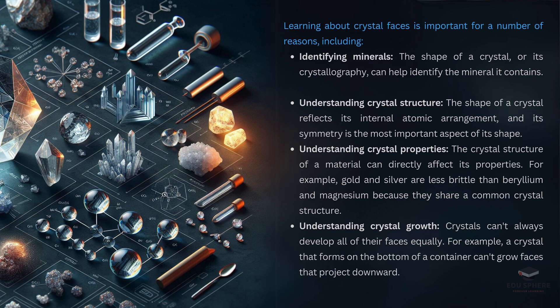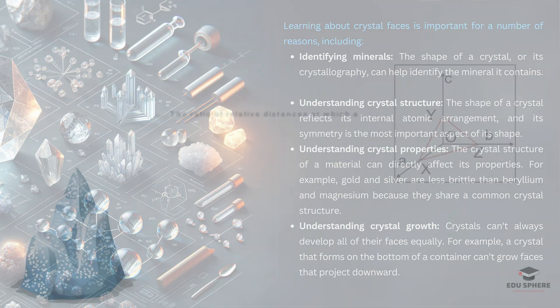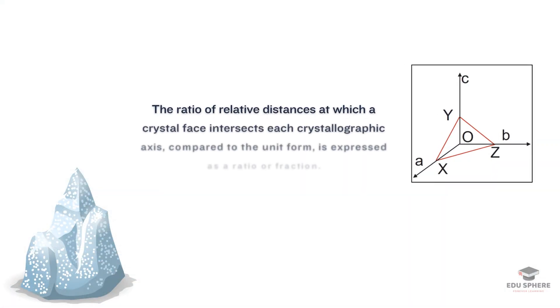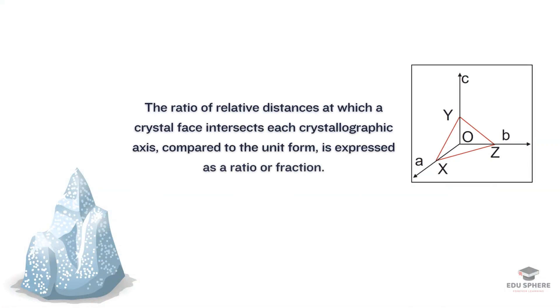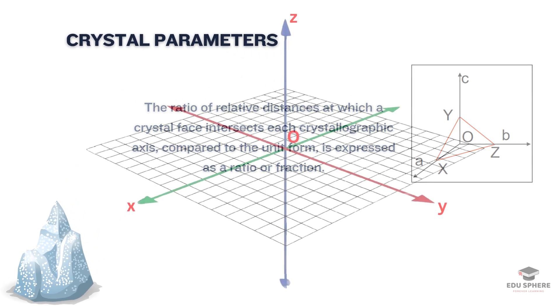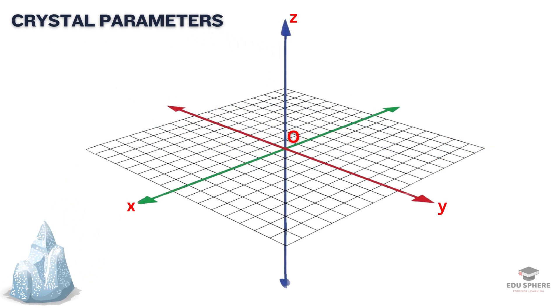We had discussed that the ratio of distances where a crystal face cuts each axis compared to the unit form is written as a fraction. These fractions are called crystal parameters and tell us how the face is positioned within the crystal. To visualize crystal parameters, let's examine this diagram. The imaginary lines labeled ox, oy, and oz represent the crystallographic axes, which define the orientation and symmetry of the crystal.